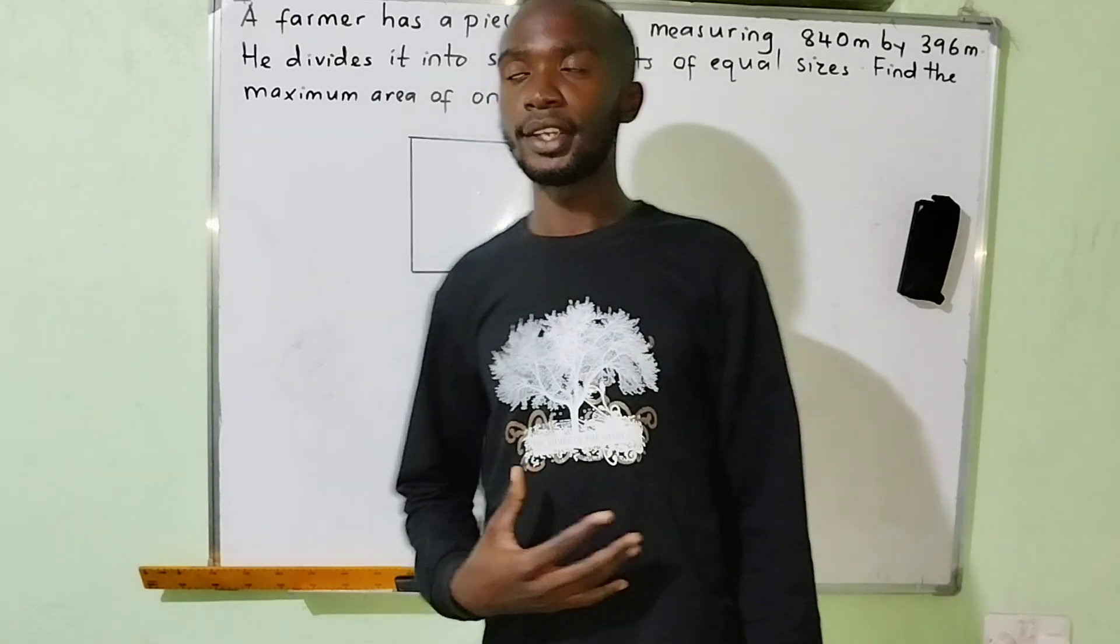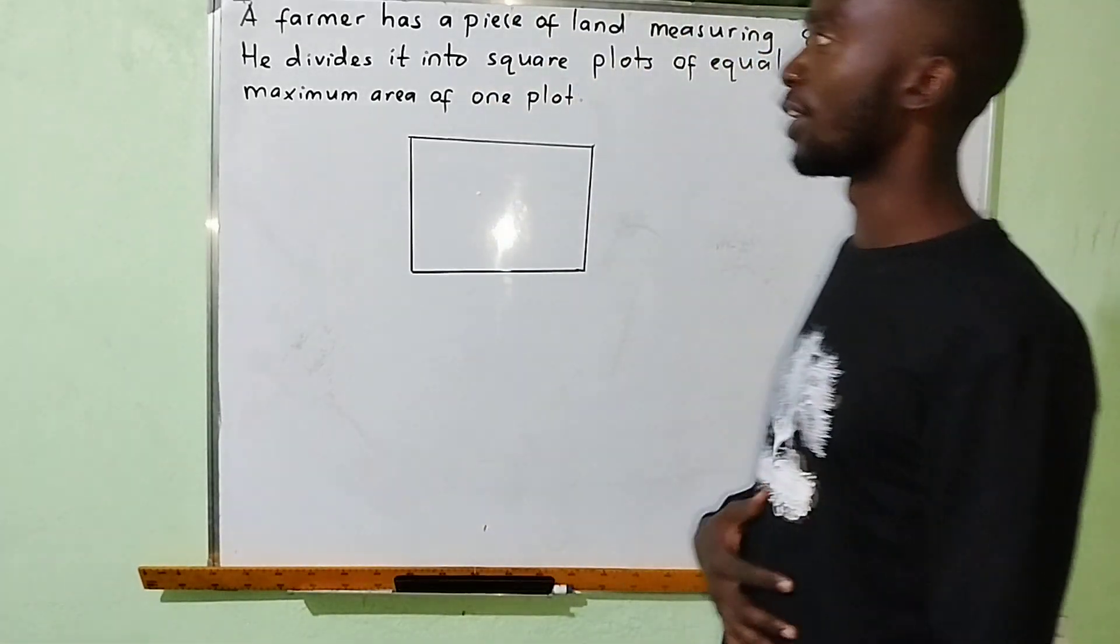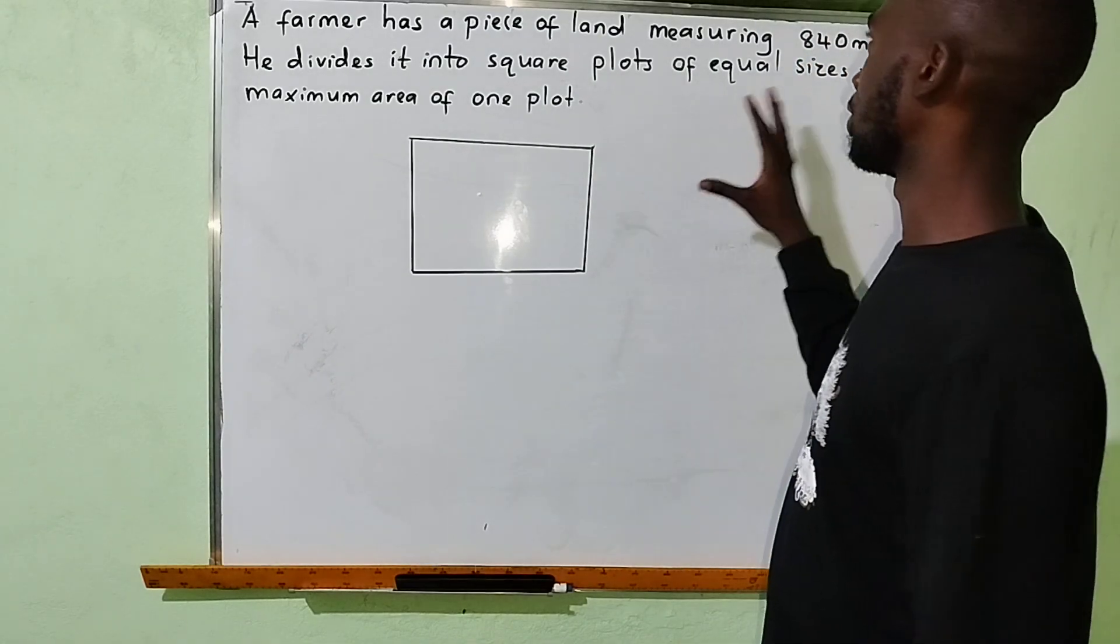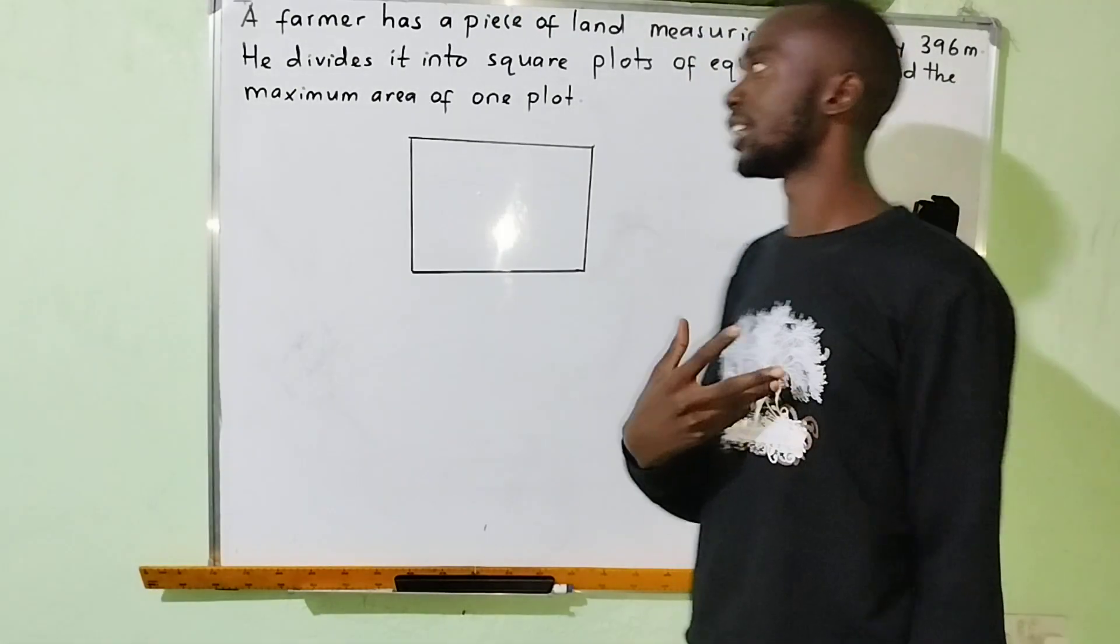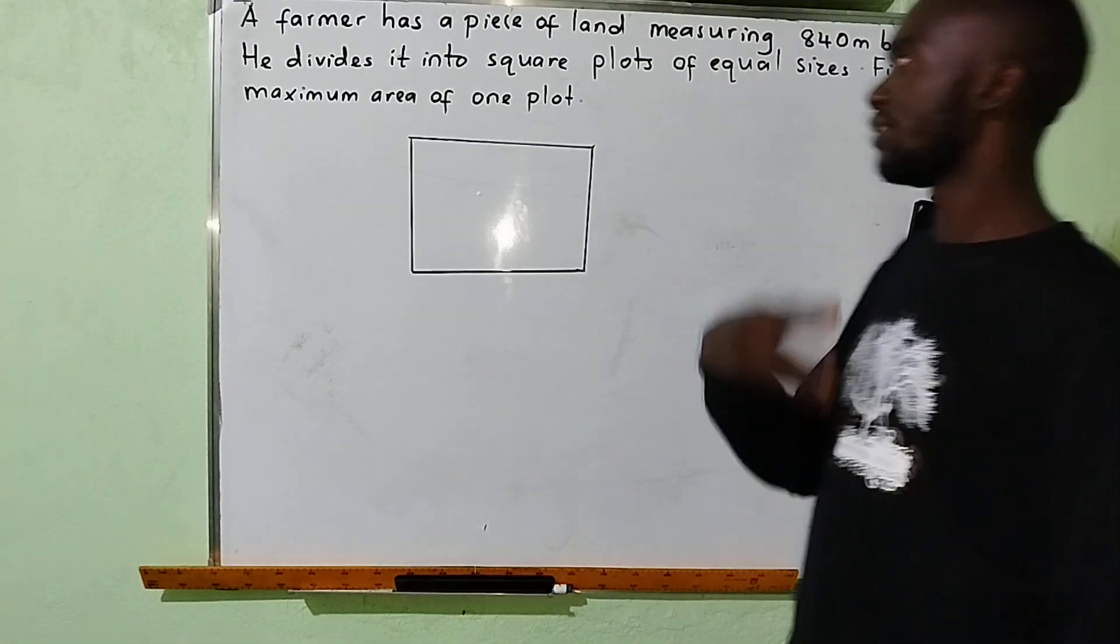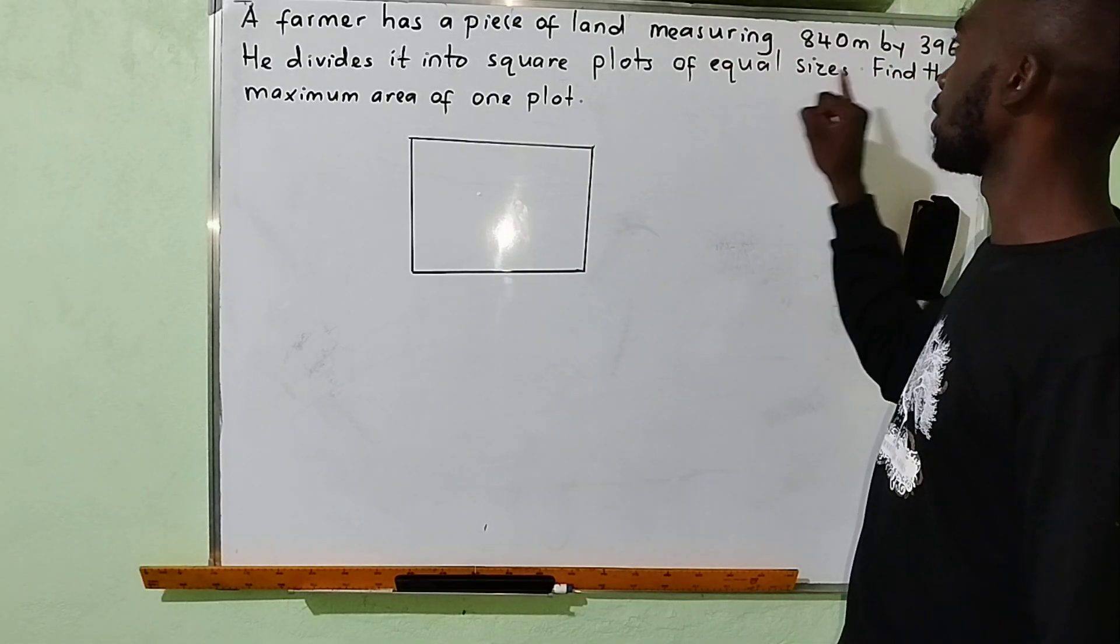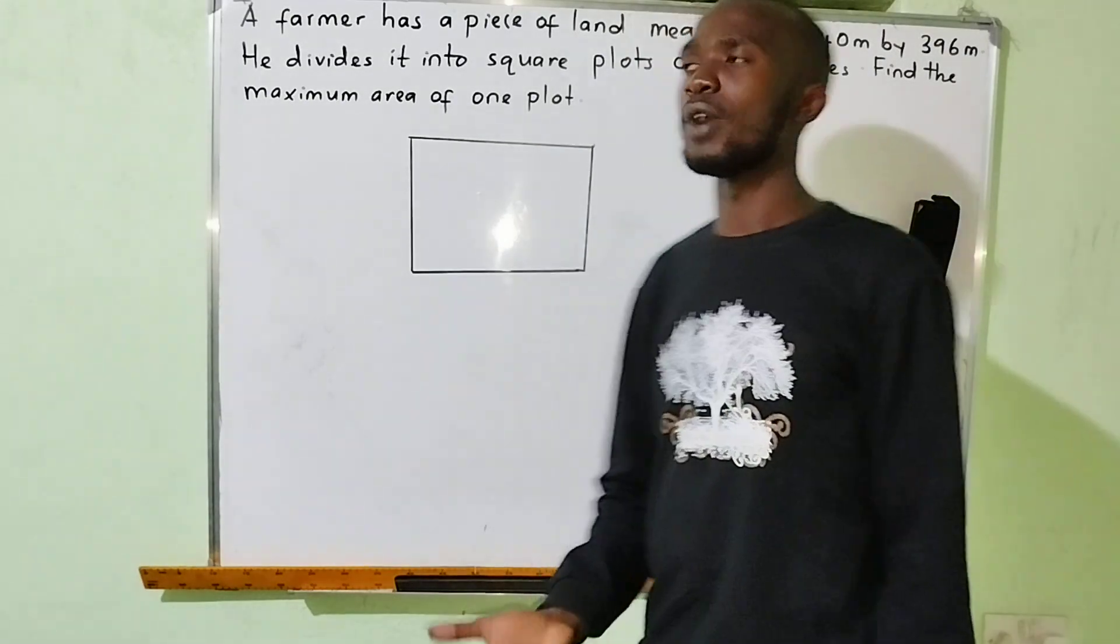Welcome to this tutorial. We are going to learn about the question that has been posted on the board here. It says a farmer has a piece of land measuring 840 meters by 396 meters. He divides it into square plots of equal sizes. Find the maximum area of one plot.